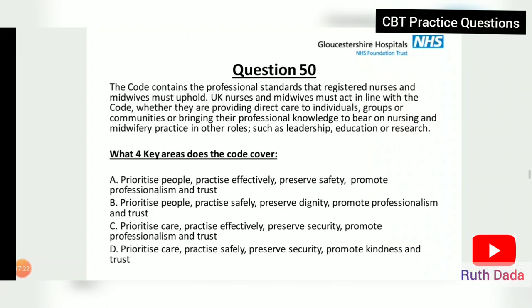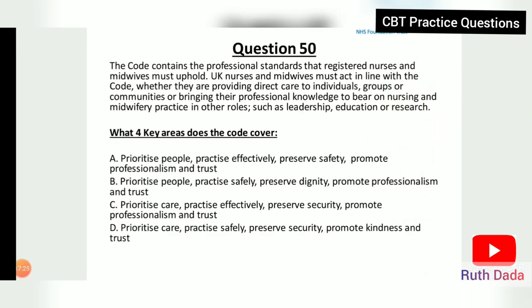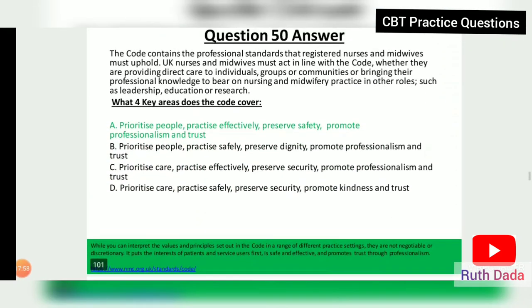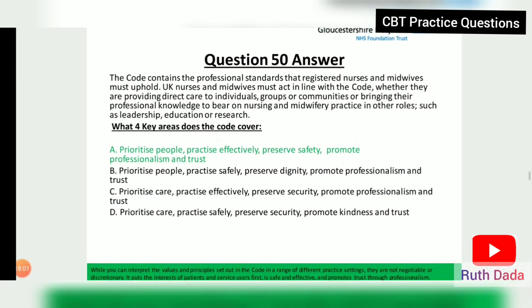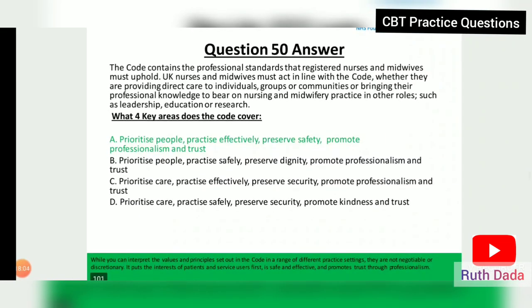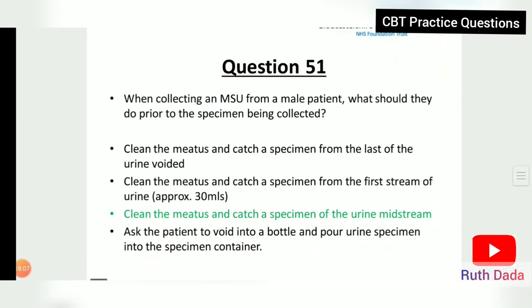Question 50: The Code contains the professional standards that registered nurses and midwives must uphold. UK nurses and midwives must act in line with the Code whether providing direct care or in other roles such as leadership, education, or research. The four key areas of the Code — the four Ps — are: Prioritize people, Practice effectively, Preserve safety, and Promote professionalism and trust.